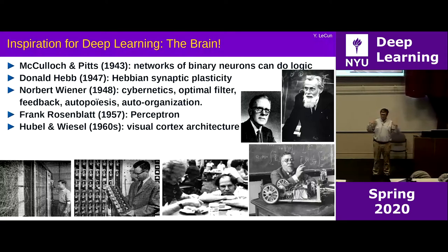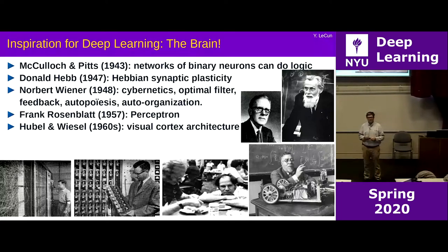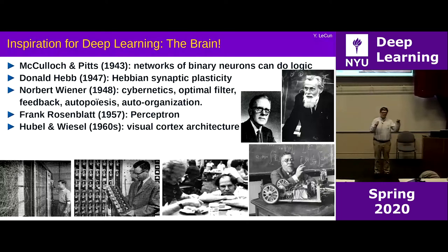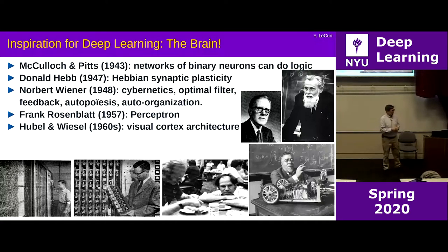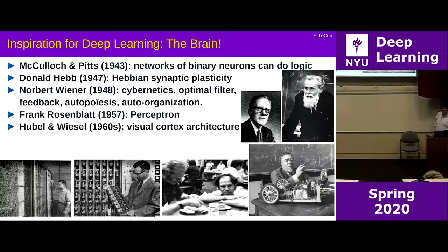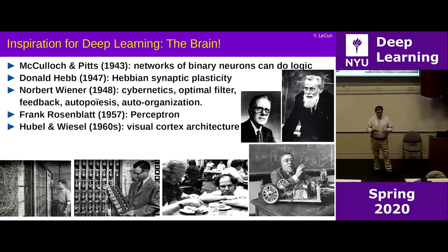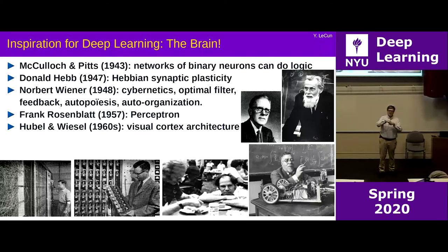Then there was Donald Hebb, who had the idea that the brain learns by modifying the strength of connections between neurons — the synapses. He proposed what's now called Hebbian learning: if two neurons fire together, the connection between them increases; if they don't fire together, maybe it decreases. That's not a complete learning algorithm, but it's a first idea. Then cybernetics was proposed by Norbert Wiener — the whole idea that systems with sensors and actuators can have feedback loops and self-regulate.